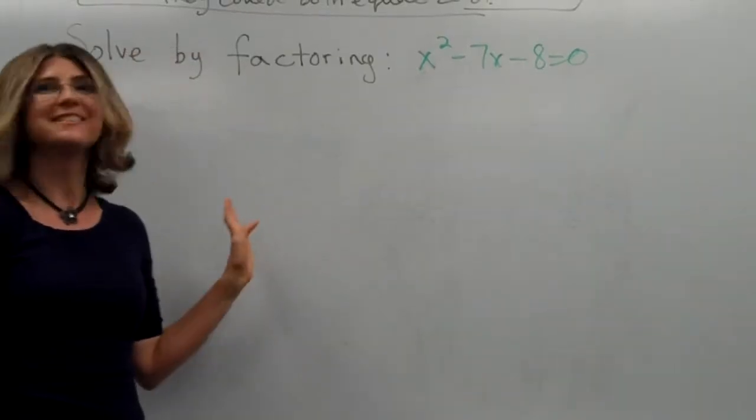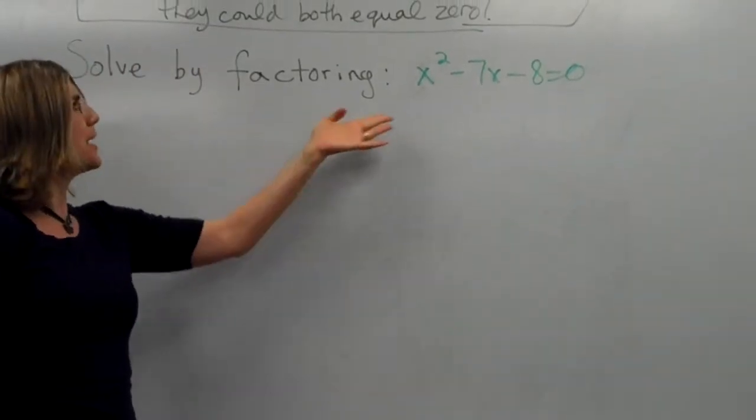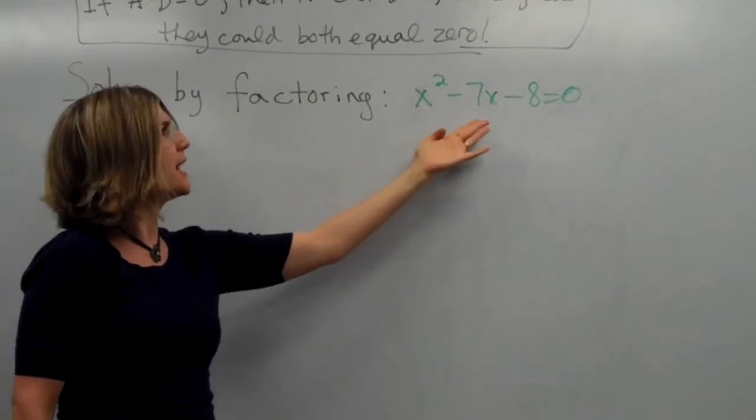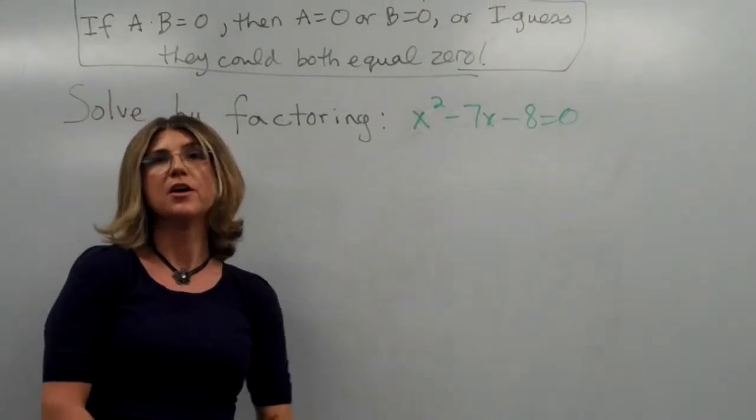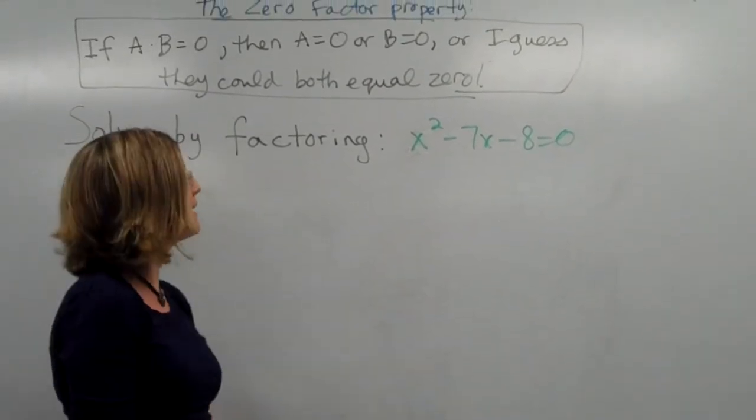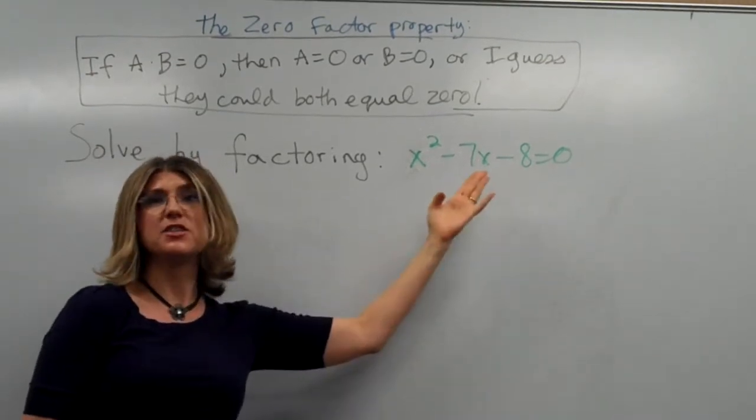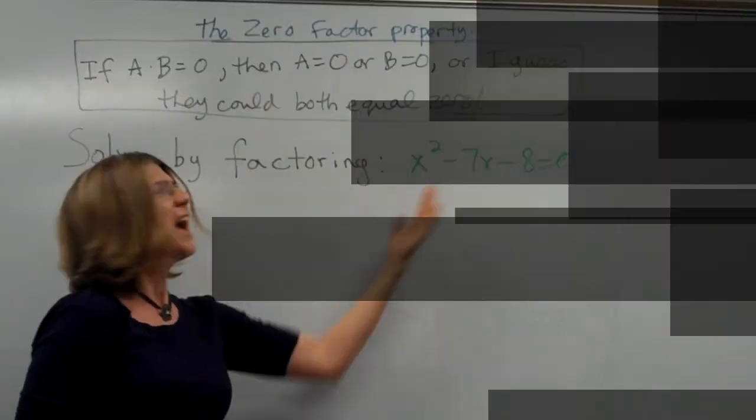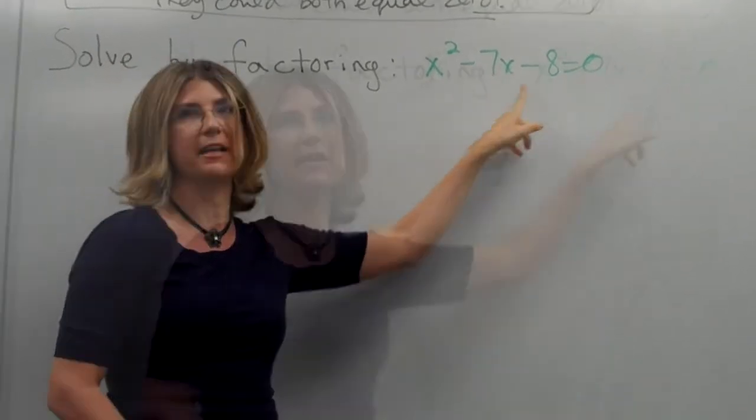Hi, superclass. Let's solve by factoring. So, here we have x squared minus seven x minus eight equals zero. So, we want two numbers that multiply to give us eight, and then subtract to give seven. How do we know it's subtract? It's because this sign is negative.